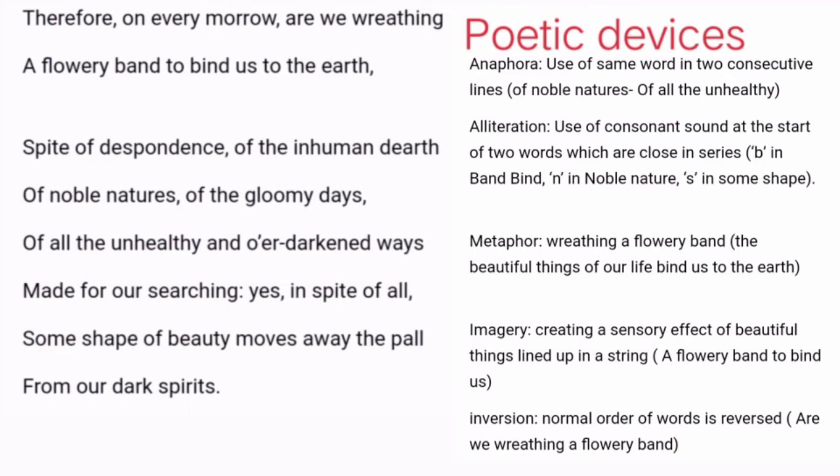Alliteration is the use of a consonant sound at the start of two words which are close in series. Here, the 'b' sound in 'band' and 'bind' is repeated in close series. Then the 'n' consonant sound is there in 'noble' as well as in 'nature', and then again the 's' sound in 'some' and 'shape'.